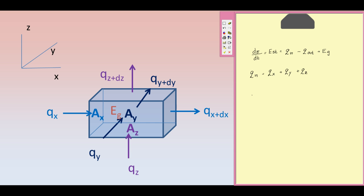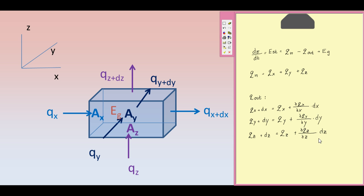Heat conducted out of the element in the direction of x is expressed accordingly, and similarly for the y and z directions. This term is the amount by which the heat rate transfer changes along the direction.